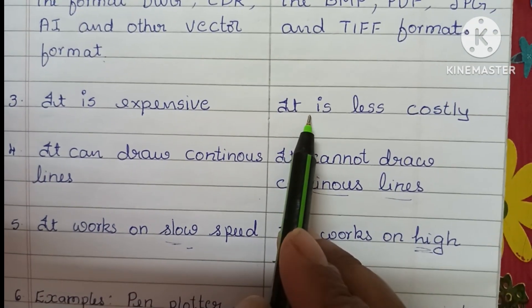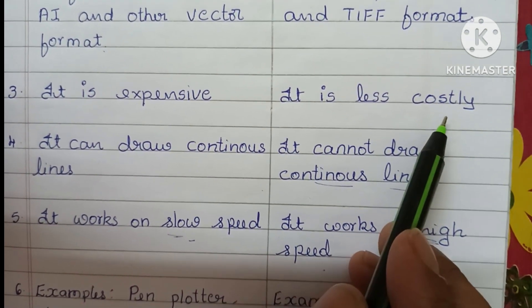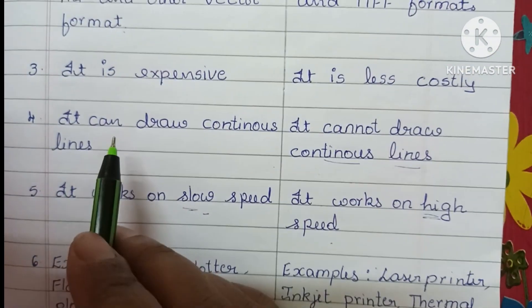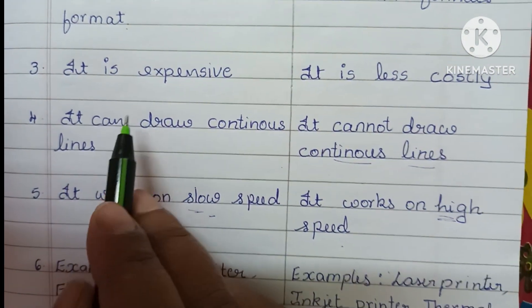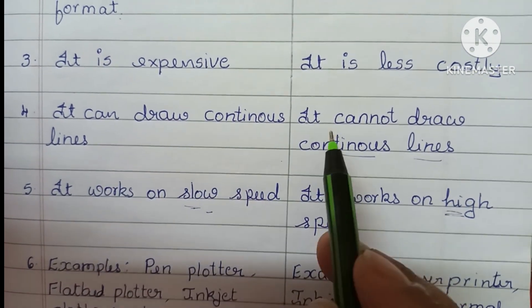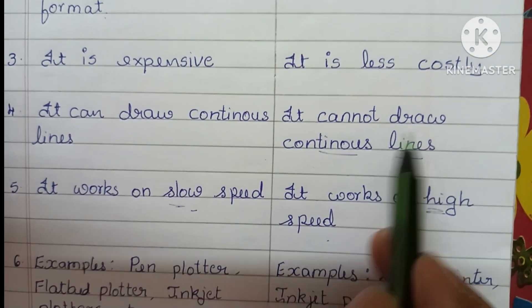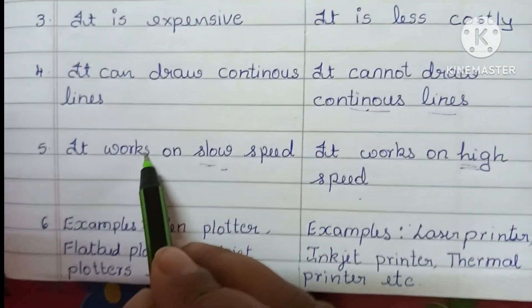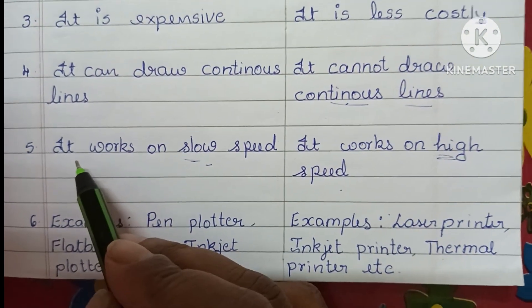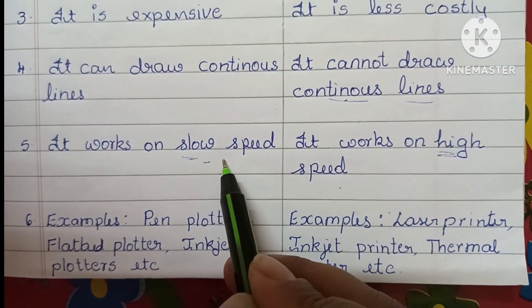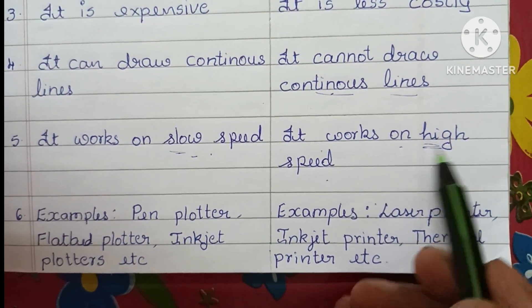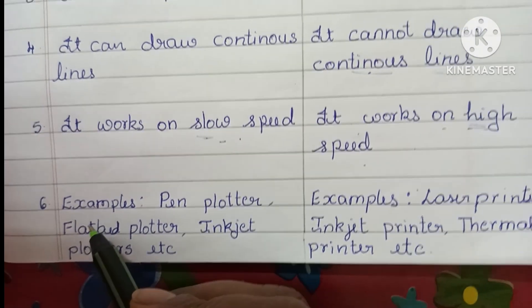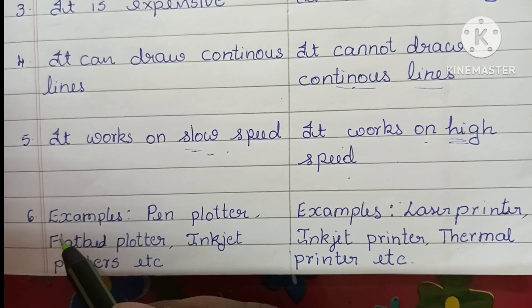The third difference is cost. A plotter is expensive, while a printer is less costly compared to the plotter. Fourth, a plotter can draw continuous lines, whereas a printer cannot draw continuous lines. Fifth is speed — the speed of a plotter is low, while the speed of a printer is high.